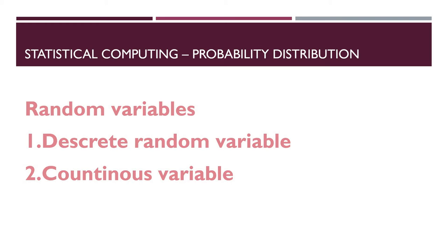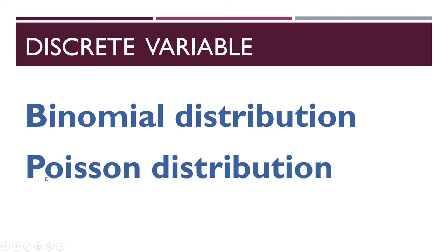The range of this variable is a discrete set of points. From this discussion it is clear that the random variable in example 1 is a discrete random variable. Moving on: binomial distribution and Poisson distribution are the main types of discrete distributions.